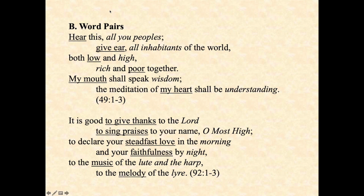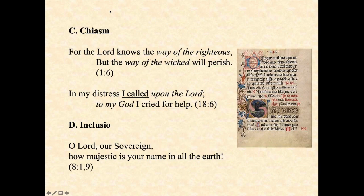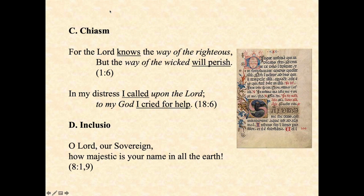There is something else which is called chiasm, and this is where the word order is switched. For example, 'for the Lord knows' — the verb comes first — and then 'the way of the righteous,' the object. But in the second line, the object comes first, 'the way of the wicked,' and then 'will perish.' In the second example, 'I called' is toward the beginning, and then 'I cried for help' at the end. 'Upon the Lord' is at the end; 'to my God' at the beginning of the half verse.